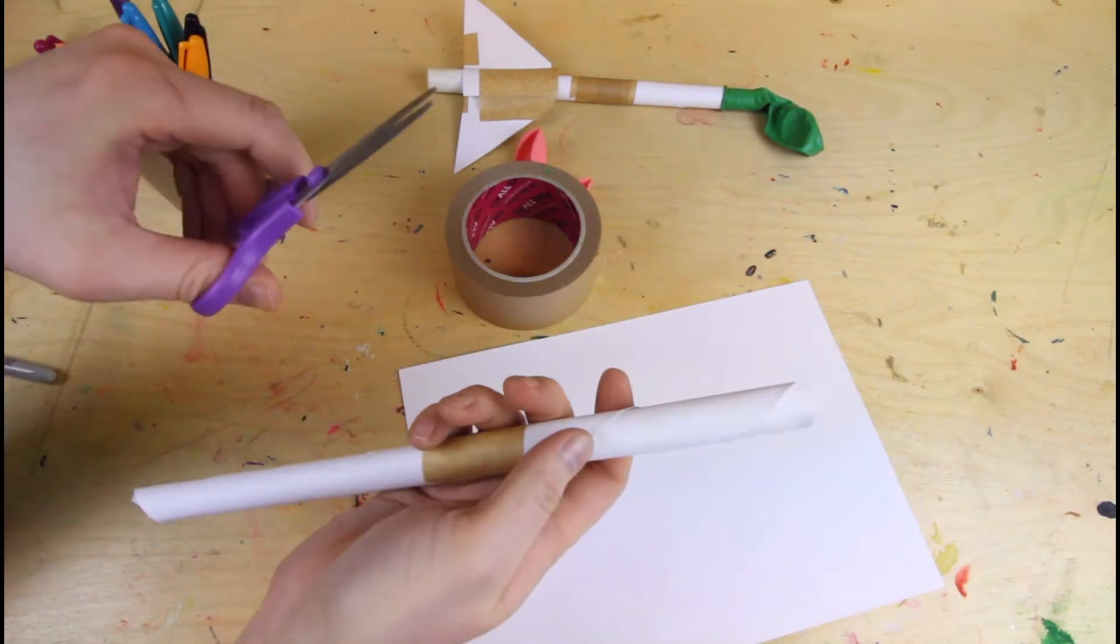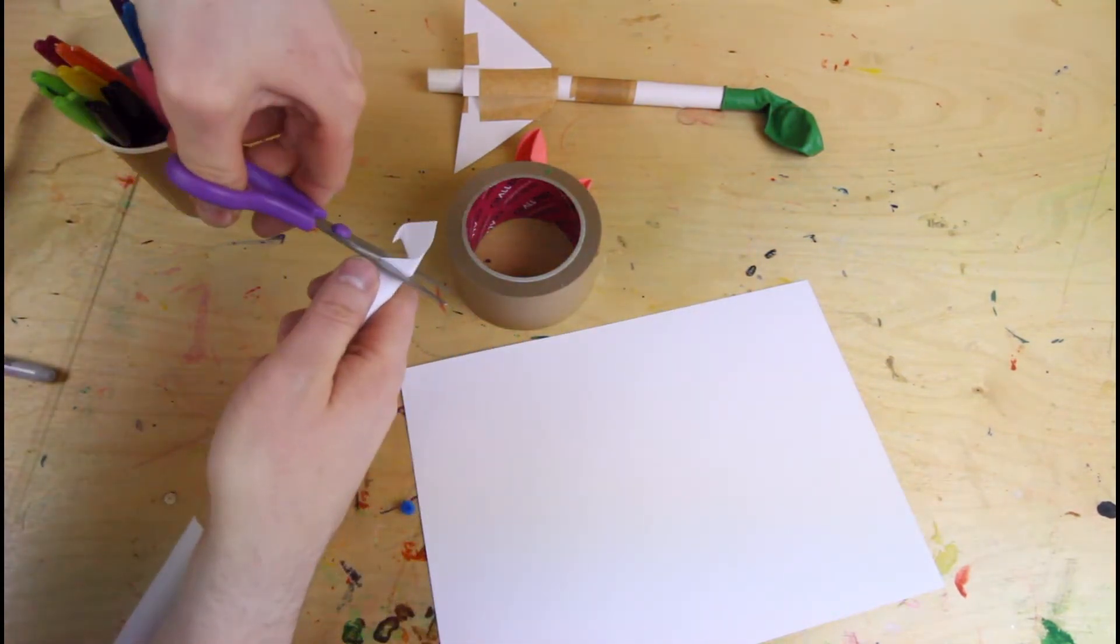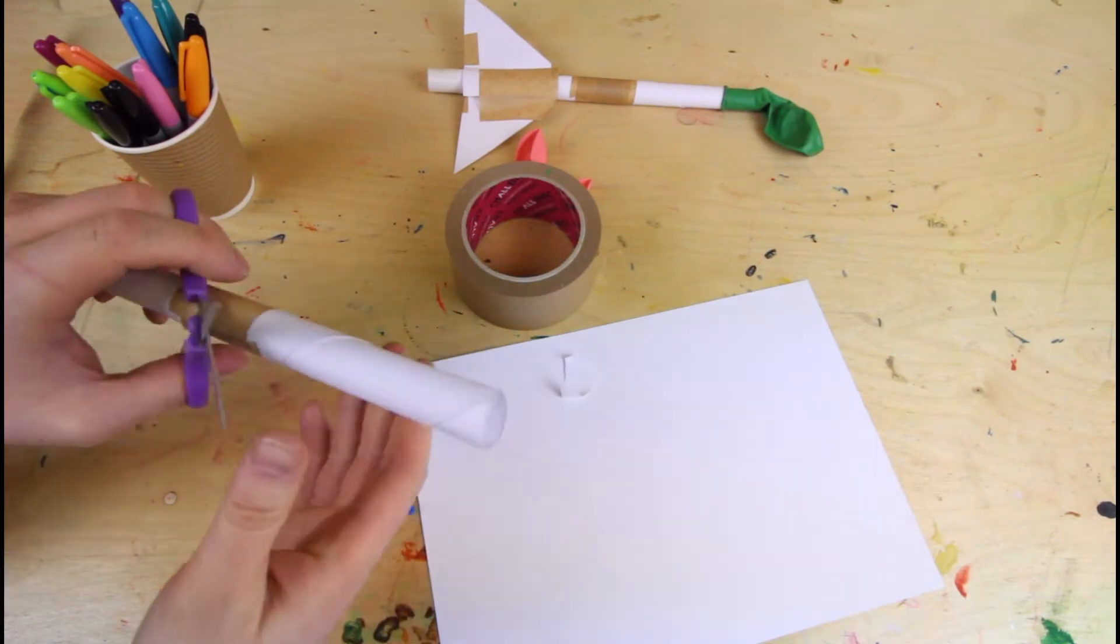And then you've got to neaten up each end. Just cut it off so it's square.